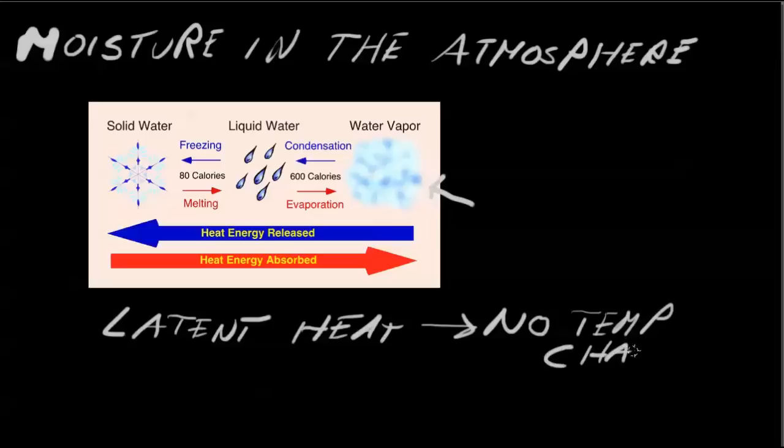Energy is being added or taken out of the system, and you think of the atmosphere as a system, but there's no temperature change. Latent heat, latent energy is really stored. So we think of this as stored energy.